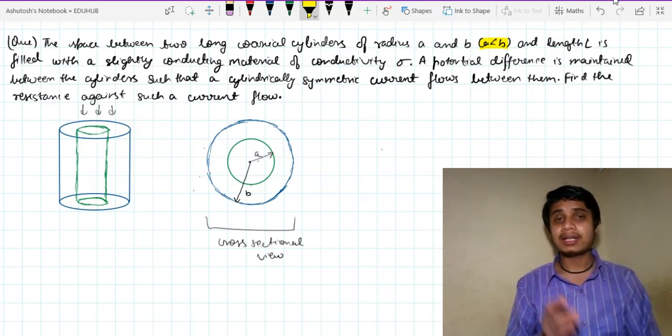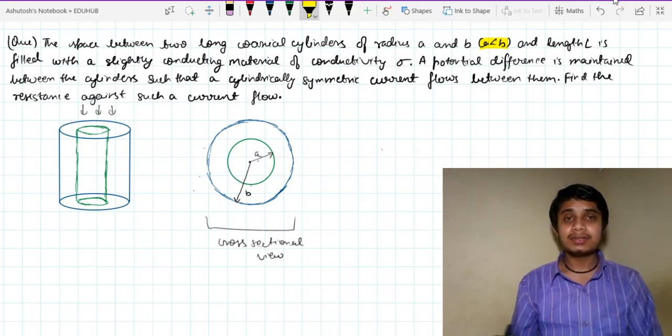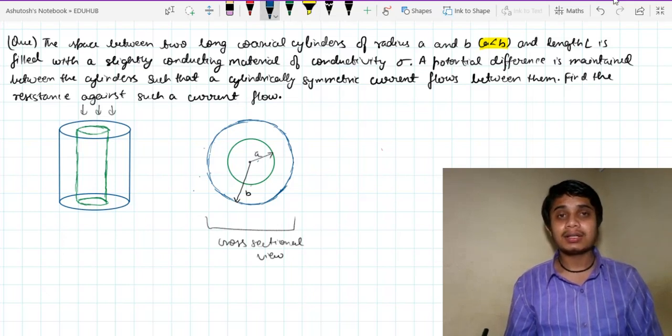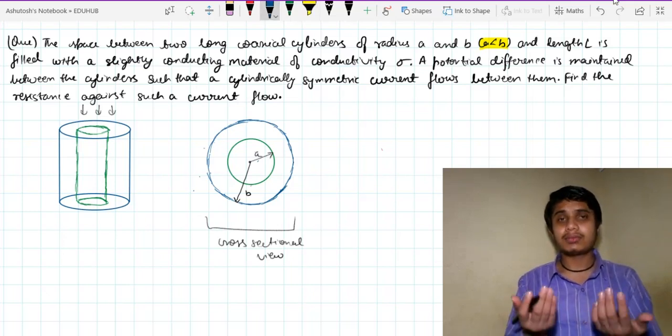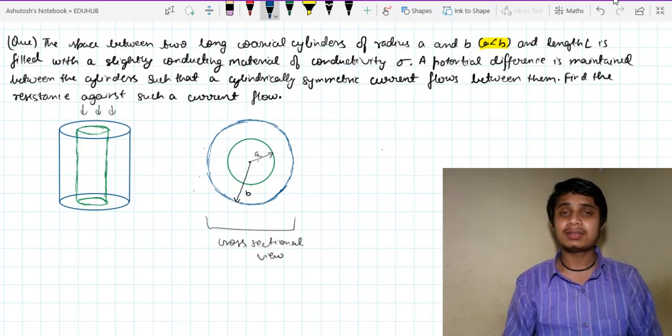So I have drawn the corresponding diagrams on your screen. The first diagram is the lateral view of the system and the second diagram is the cross-sectional view. That is the view when you look at the system from the top.